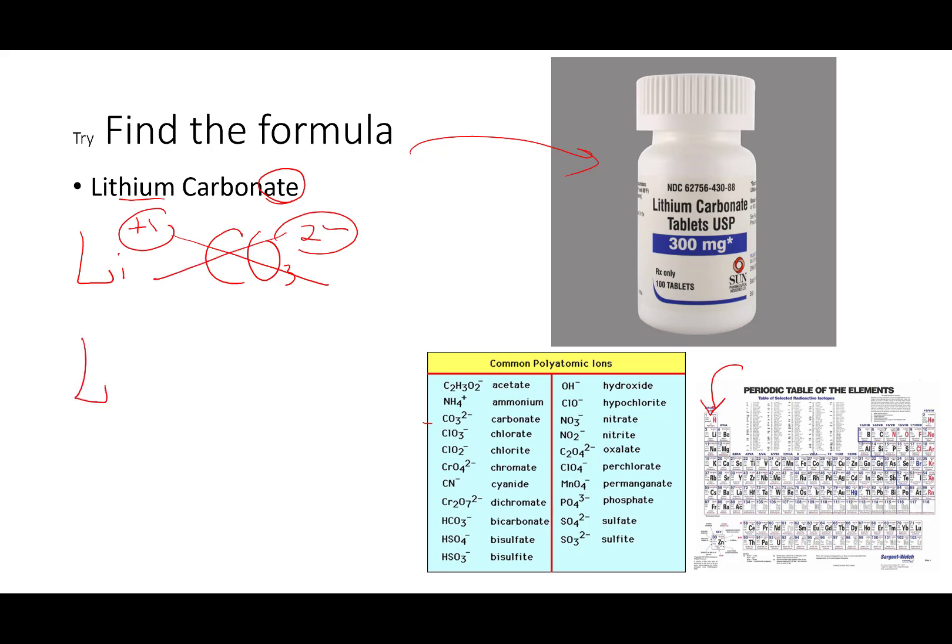So, you crisscross. Lithium two comes down. CO3. Do we ever write ones in subscripts? No. And that is it. And you go, why are there no parentheses? Well, you don't need parentheses around just an element like lithium. And there's only one carbonate. And the name is lithium carbonate.